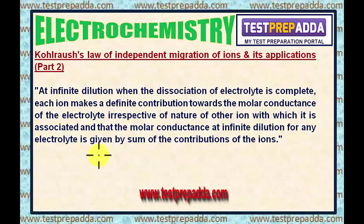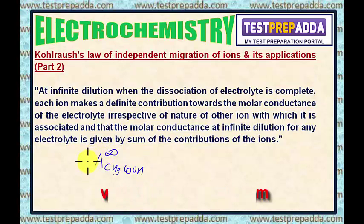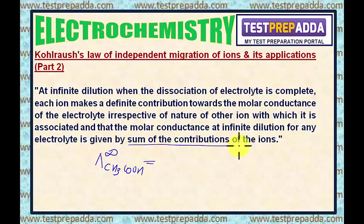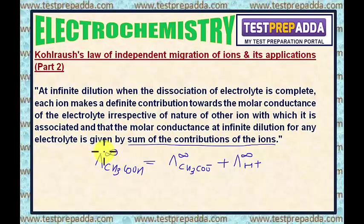For example, if I write the molar conductance of CH₃COO⁻ at infinite dilution, as per the law, I can write this as the sum of the contributions of the ions — molar conductance at infinite dilution for CH₃COO⁻ plus molar conductance at infinite dilution for H⁺. So for CH₃COOH, molar conductance at infinite dilution will be the sum of these two molar conductances.